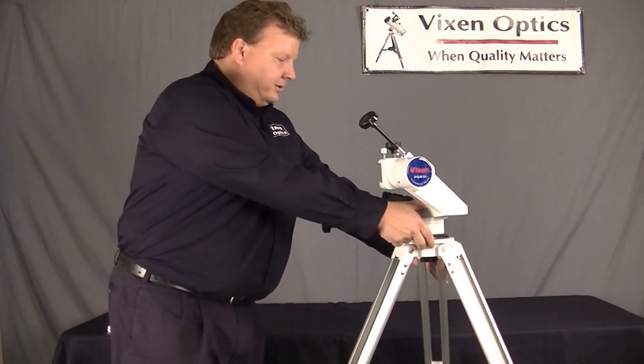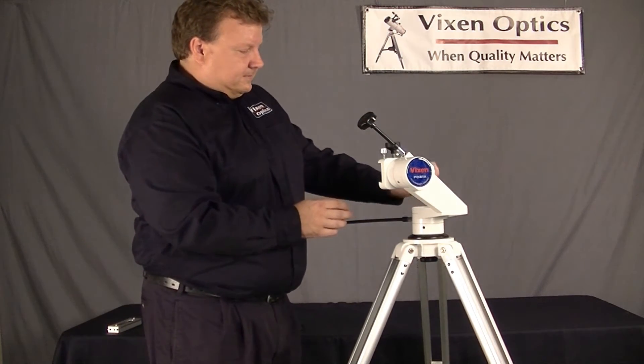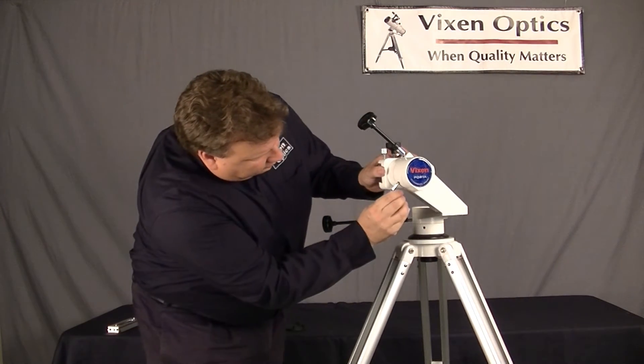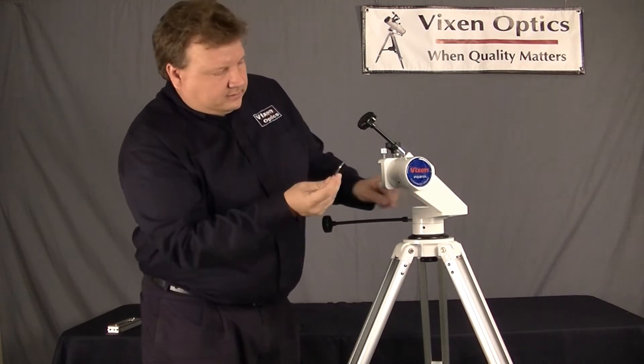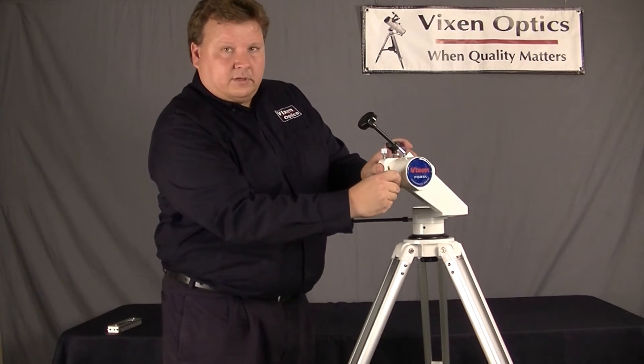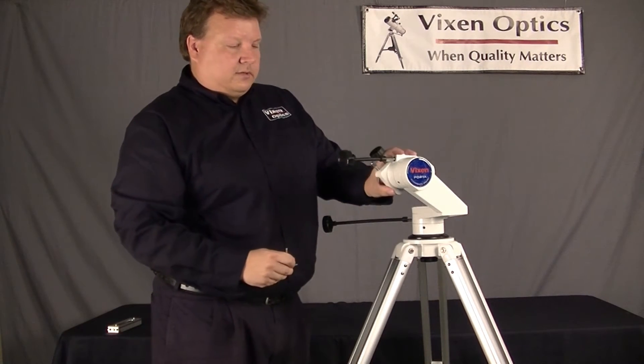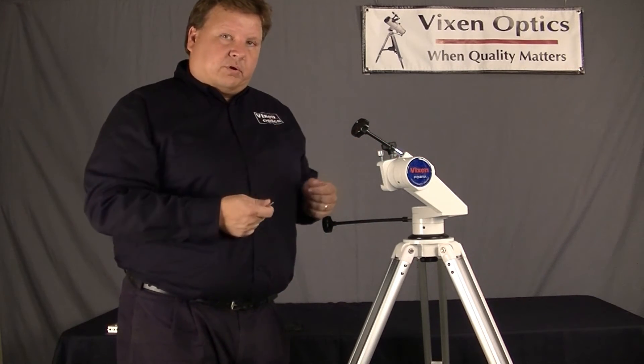So to loosen this, I take out the Allen wrench and I find the hole here. I grabbed the wrong one. The smaller Allen wrench, and I put it in the adjustment hole here and loosen it slightly, and now it's a lot easier to turn. So you can adjust it to whatever your preference is.